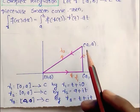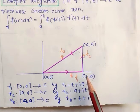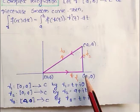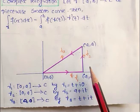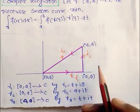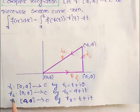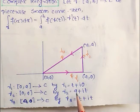Now consider gamma 2: here the x-coordinate is constant, that is x = a, and only y is varying. So the parametric equation of gamma 2 is: gamma 2 maps [0, a] to z, by gamma 2(t) = a + it.